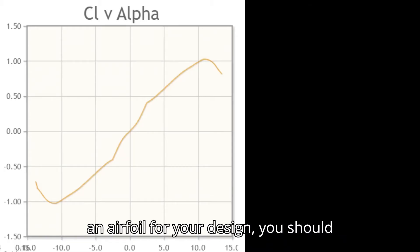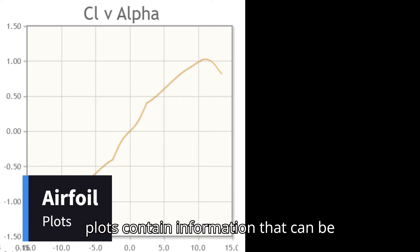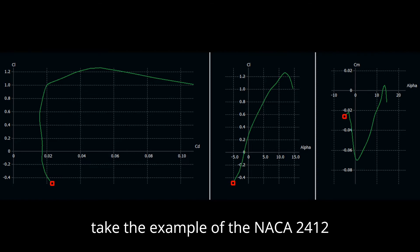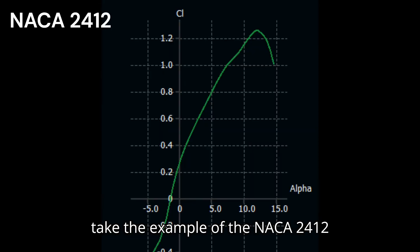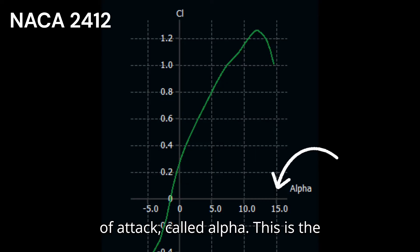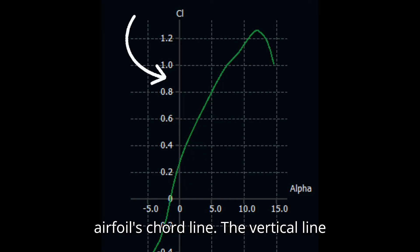To select an airfoil for your design, you should know how to read airfoil plots. These plots contain information that can be used to compare different airfoils. Let's take the example of the NACA 2412 airfoil. The horizontal axis is the angle of attack, called alpha — the angle at which the moving air strikes the airfoil's chord line.